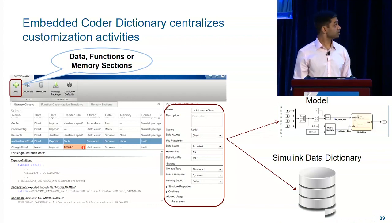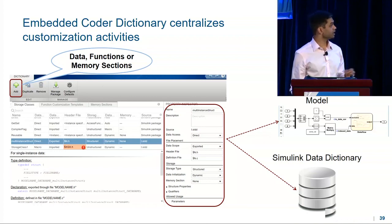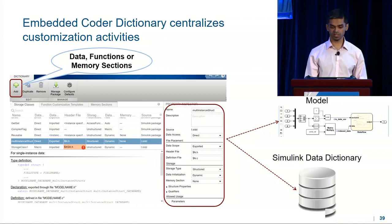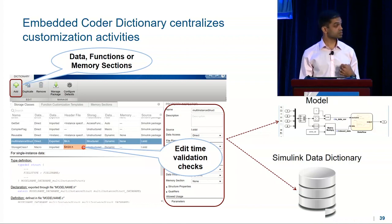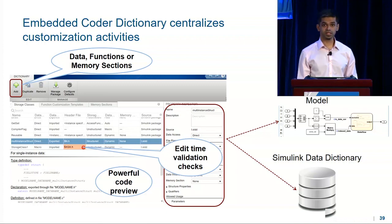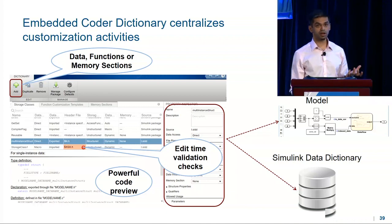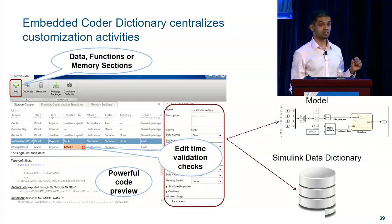Creating a new customization for data structures, function customizations, or memory sections is as simple as clicking Add. Then you can edit the customization in the property inspector. We have a powerful data model that backs this, so we can provide edit-time checks that prevent you from inadvertently entering incorrect values. In 18B, we also added a code preview, so you can see exactly what your generated code looks like. Tools engineers will find that the centralization of code specifications in the embedded coder dictionary helps enforce these across an organization.